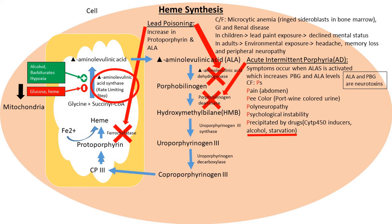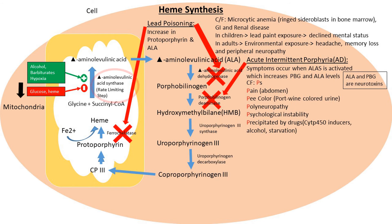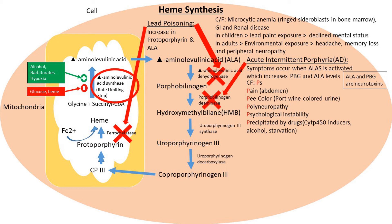Another trigger is starvation: low glucose levels activate ALA synthase because glucose normally inhibits this enzyme. With reduced glucose, ALA synthase has less inhibition, promoting the pathway. The key take-home message is that anything stimulating ALA synthase leads to AIP symptoms. Treatment involves administering hemin and glucose to symptomatic patients — hemin is a synthetic form of heme, and both act to inhibit ALA synthase.